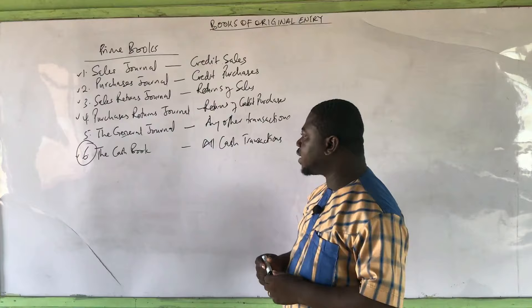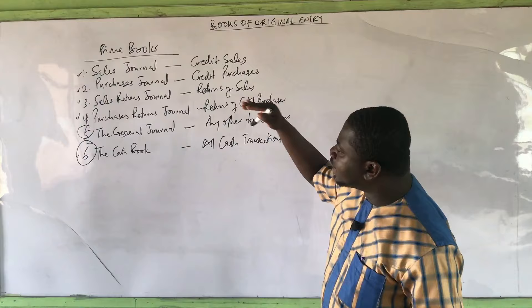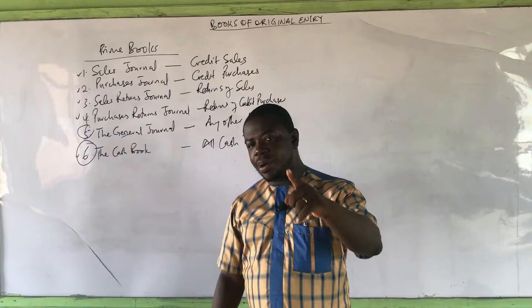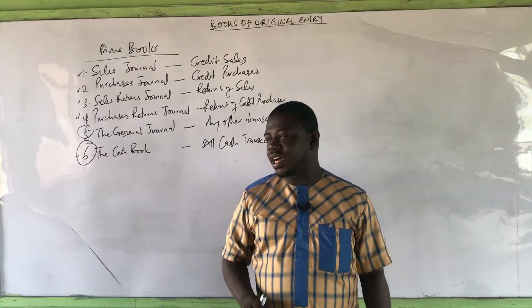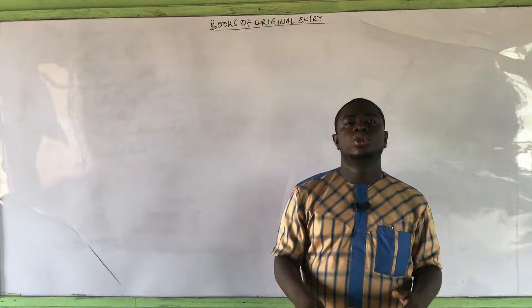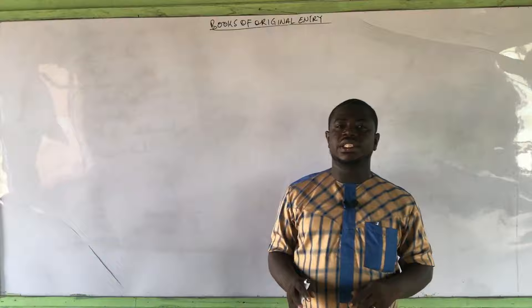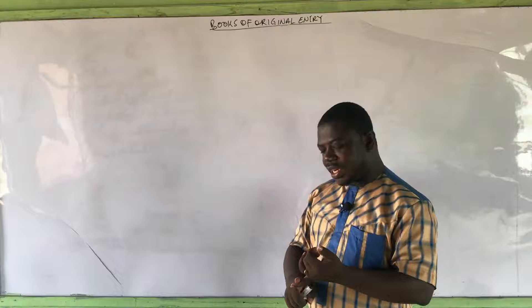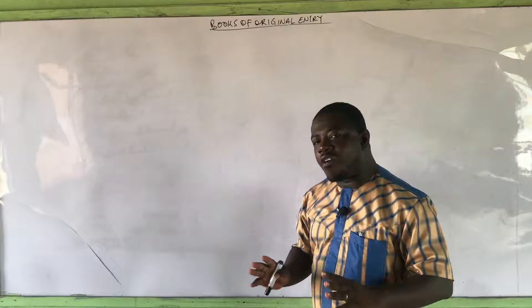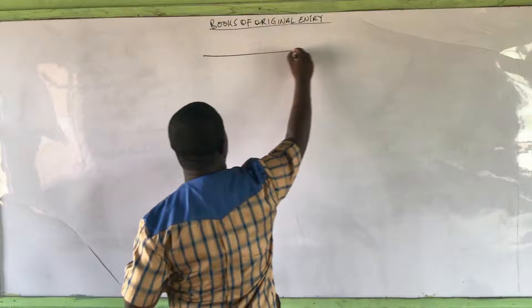I have already treated the cash book — you can refer to those videos. Later I will also talk about the general journal in a different video. Right now I want to focus on the first four: the sales journal, purchases journal, sales returns journal, and purchases returns journal. The good news is that all four have the same format, so when I give you one format, you can use it for all four and it works.